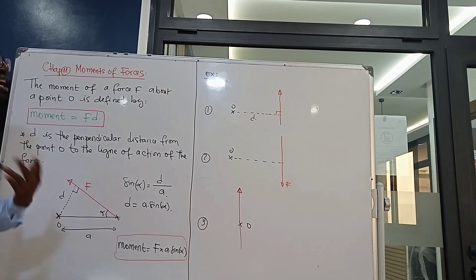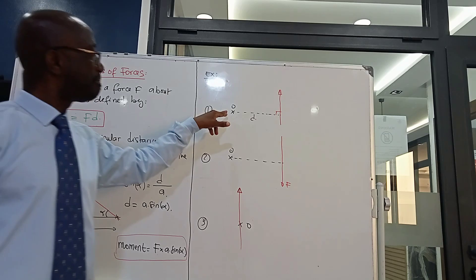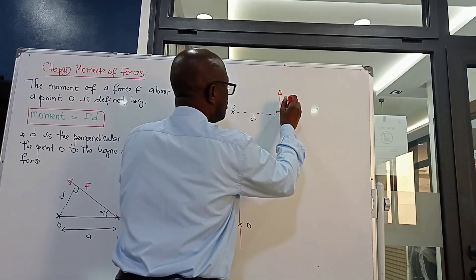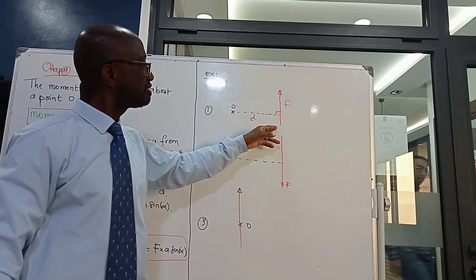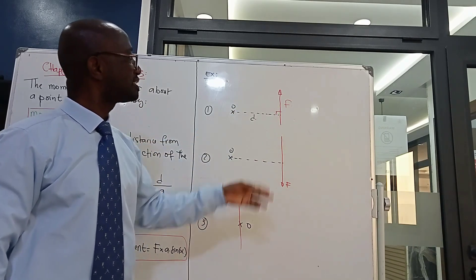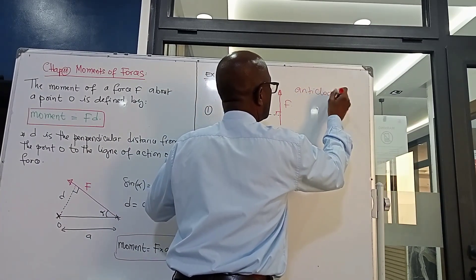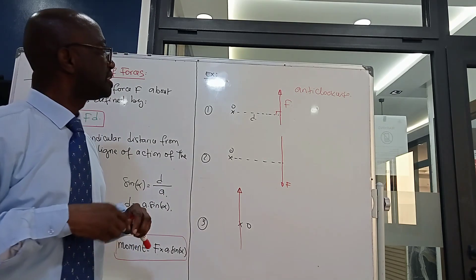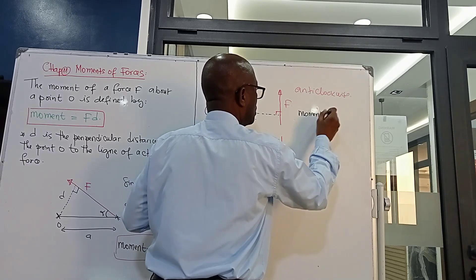Now let's look at the different signs a moment can have. If we have point A, distance D, and force F, and the direction of the force is anti-clockwise, then the moment will be positive.